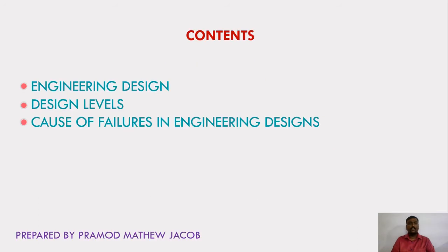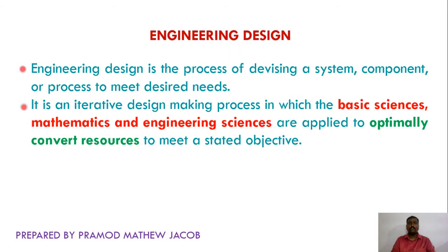In this session we are going to learn about engineering design, what are the various design levels, and what are the causes of failures in engineering designs. An engineering design is the process of devising a system, component, or process to meet desired needs or user requirements. Engineering design is an iterative decision-making process in which basic science, math, and engineering sciences are applied to optimally convert resources to meet a stated objective.